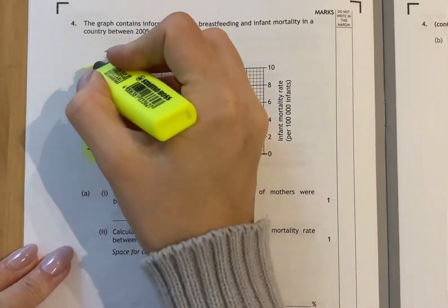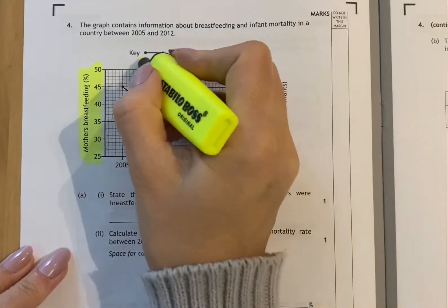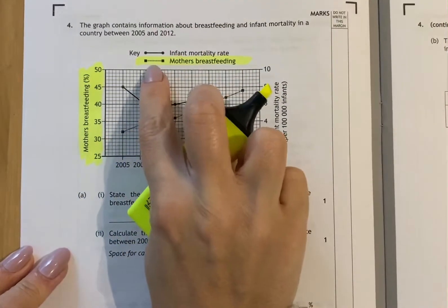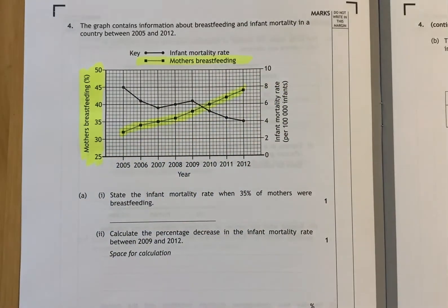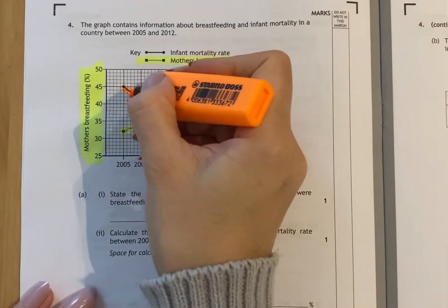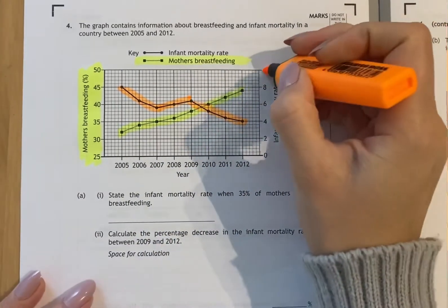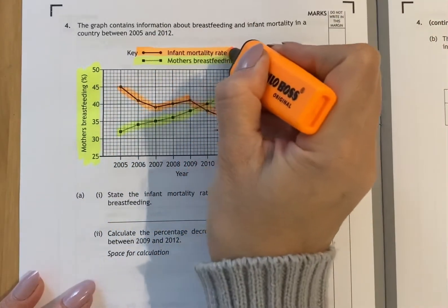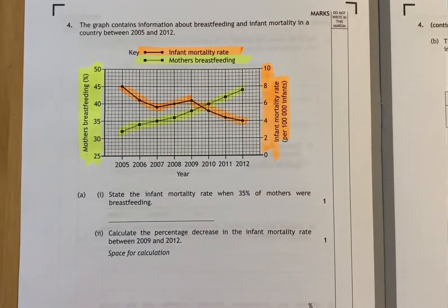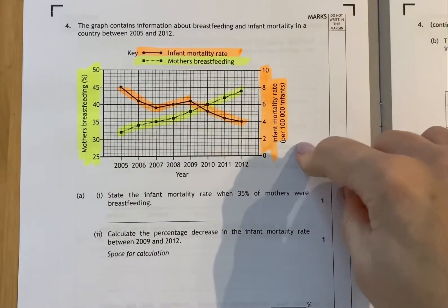One Y-axis we'll cover with yellow highlighter — this is mother's breastfeeding, shown as the dotted line. The other line is the infant mortality rate. Note that mother's breastfeeding is measured as a percentage, and the infant mortality rate is per 100,000 infants.